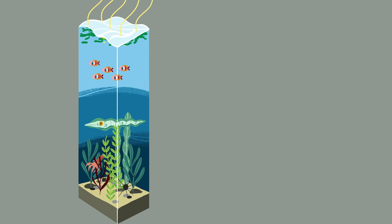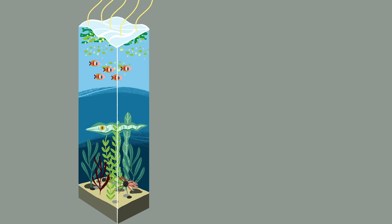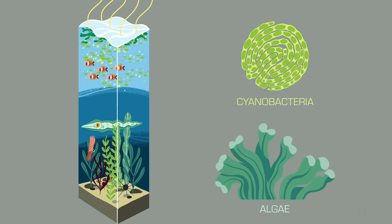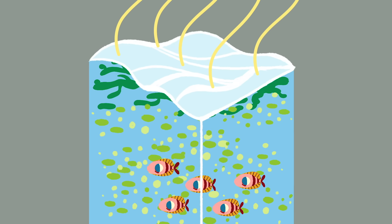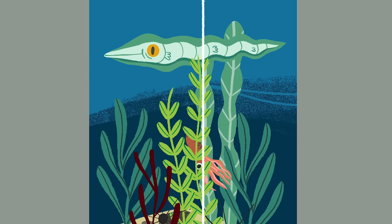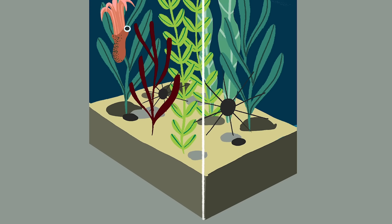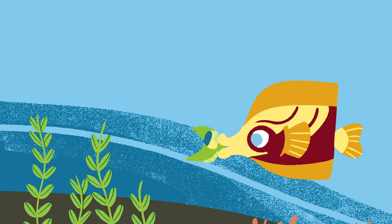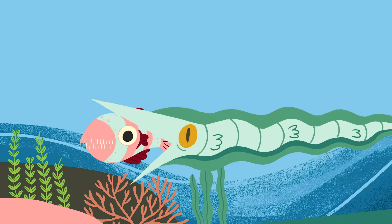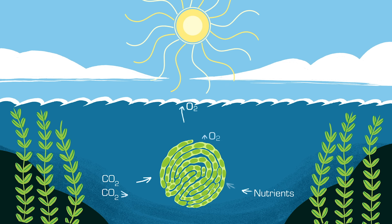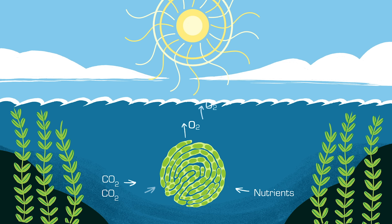In any body of water that receives sufficient sunlight, plant-like organisms such as algae and cyanobacteria thrive. Clouds of algae streak the surface of deep waters, and in shallower regions, large seaweeds and seagrass cover the ground. Not only do these organisms form the foundation of local food chains, their photosynthesis provides the oxygen necessary for aquatic animals to survive.